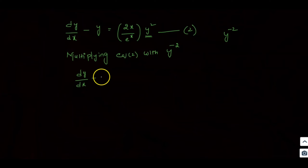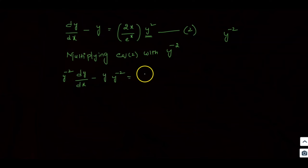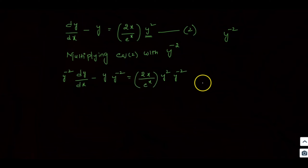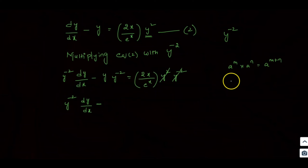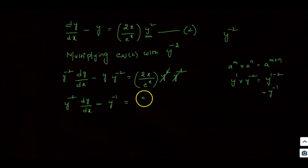Multiplying: y^(−2) · dy/dx minus y · y^(−2) is equal to 2x/e^x · y² · y^(−2). The y² and y^(−2) cancel, giving: y^(−2) · dy/dx minus y^(−1) is equal to 2x/e^x.